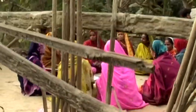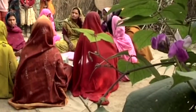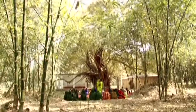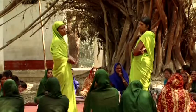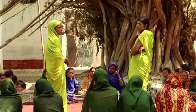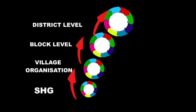Aajeevika envisages not only organizing poor women into various SHGs, but also combining various SHGs operating in a village into a village organization level. Organizations at different levels can progress along the pyramid of the administrative hierarchy from the village to the block level to the district level.